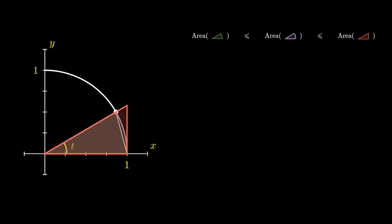But doing a bit of trigonometry, the green triangle has area half times 1 times 1 times sine of t. The area of the purple sector is given by t divided by 2π as a proportion of the area of the unit circle, π times 1 squared.